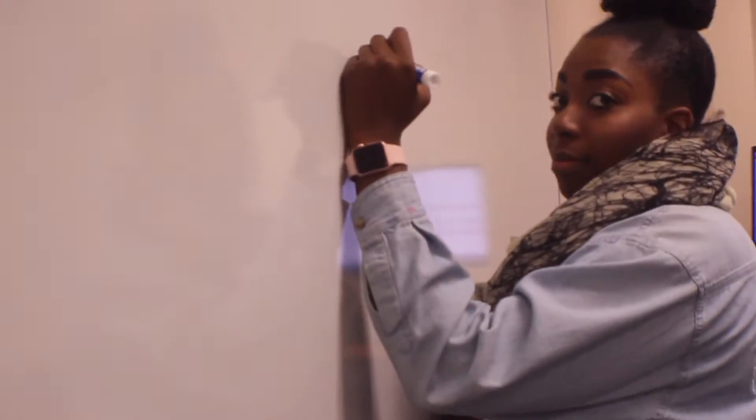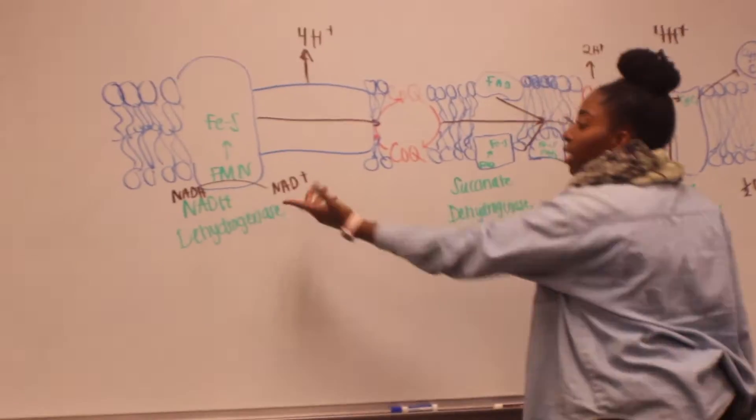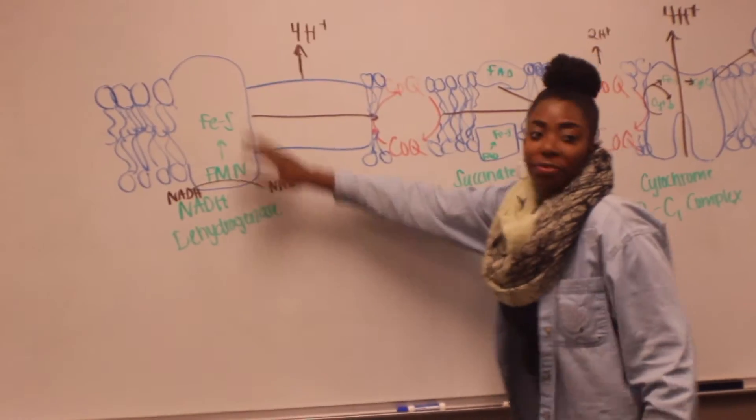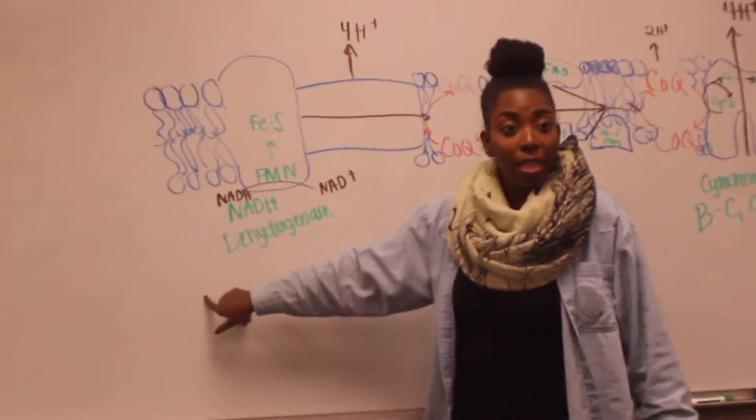What electron flow? Yeah. First you start with NADH from TCA and glycolysis. NADH dehydrogenase is the complex used for this. Please remember, don't forget, we hang out in the matrix.